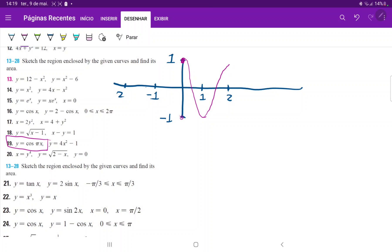Let's draw the same thing over here. It'll go like this and then come back at negative 2. This is our y equals cosine of πx.